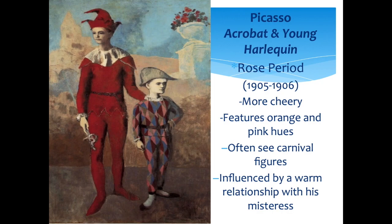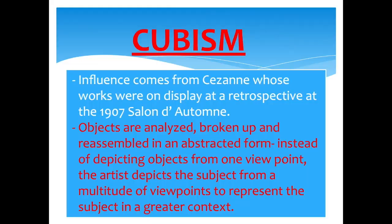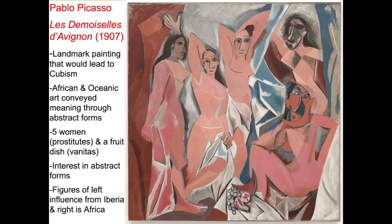Picasso was influenced by Cézanne, who arranged the world into blocks of color. Picasso took that and tried to deconstruct the human form — showing one shape from multiple angles — which led to Cubism. Cézanne's work was on display at a retrospective in 1907 at the Salon d'Automne. In Cubism, objects are analyzed, broken down, and reassembled in abstract form. Instead of depicting a subject from one viewpoint, the artist shows it from multiple viewpoints to represent it in a greater context.